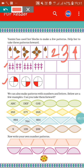Now, we will make patterns with different types of numbers and letters. In the first one, it is given ABC, then DEF, then GHI. So what will be the next one? Yes, it will be JKL. In this way, you have to complete the pattern.